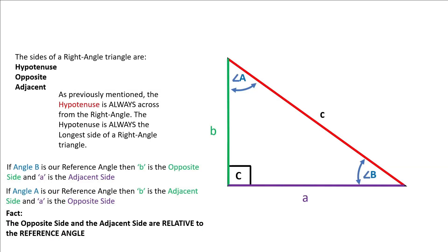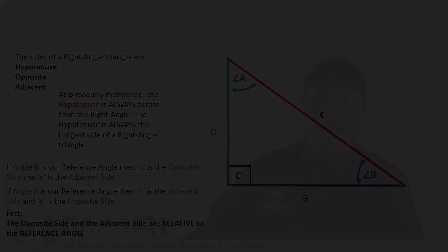So it is very important to understand that the opposite side and the adjacent side in a right angle triangle are relative to the reference angle. We must know the reference angle and then we can identify the sides of a triangle.